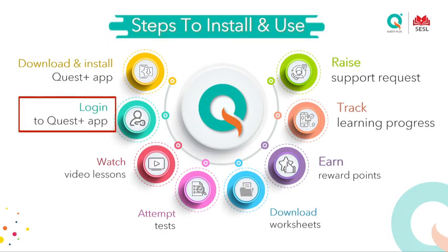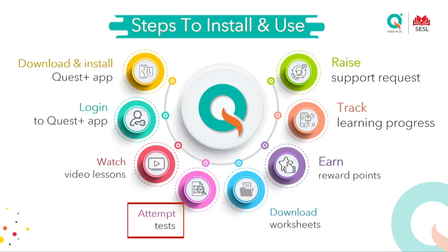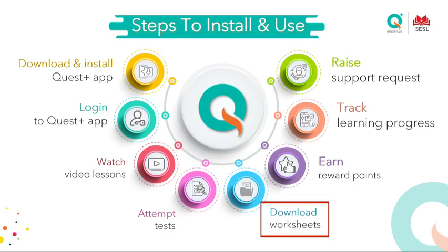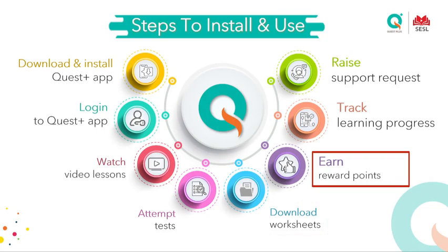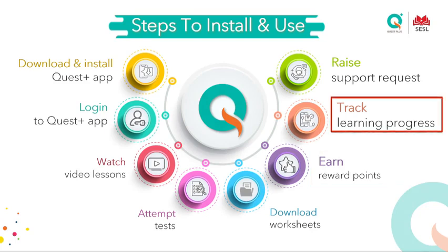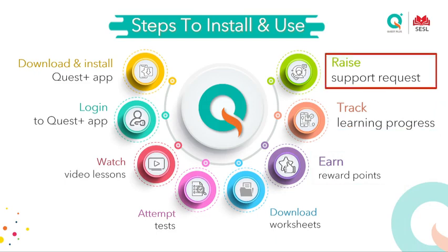Log in to the Quest Plus app, do your video lessons, attempt tests, and download worksheets which also have an answer key so you can check if you have answered correctly. If in any doubt, you can get it clarified. Earn reward points for every attempt and every video lesson you view. The reward points is something new we have started this year. You can track your learning progress based on your chapter, syllabus, and subtopic.